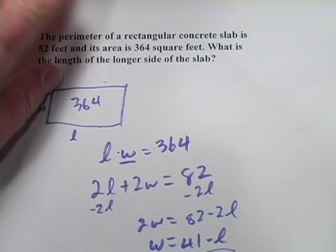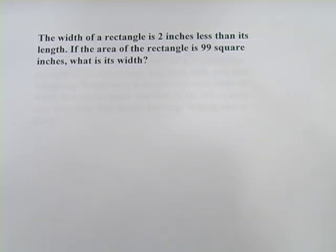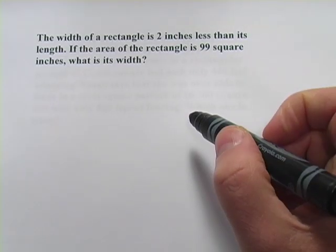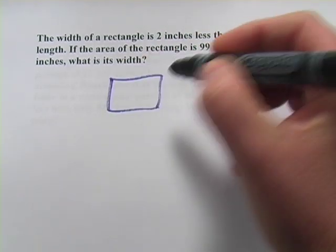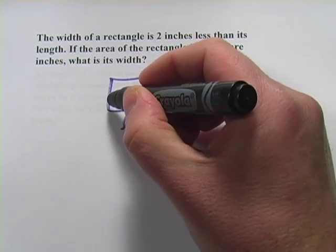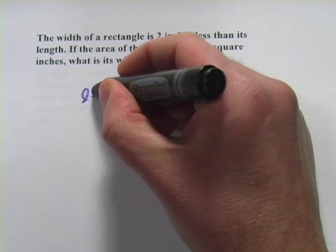All right, let's try another one. This one says the width of a rectangle is two inches less than its length. So let's think about that. Here's length. Our width is two inches less than that. So it's L minus two.